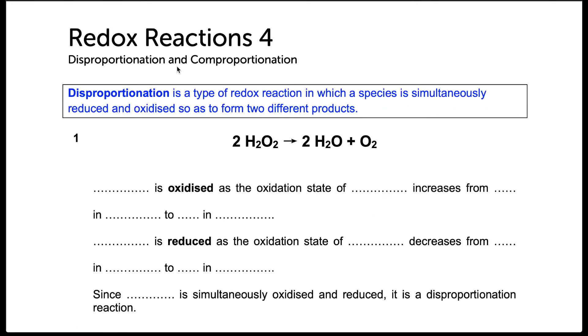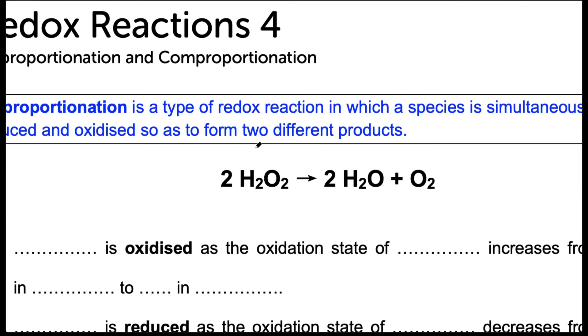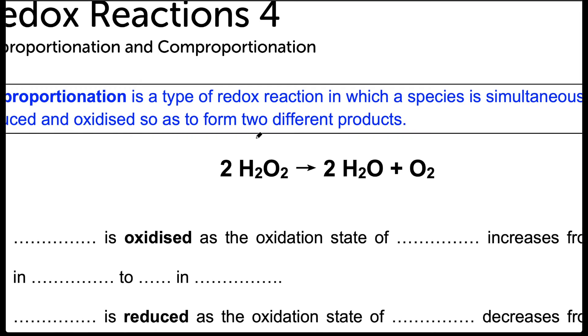A very interesting type of redox reaction is known as disproportionation. This happens when a species is simultaneously reduced and oxidized at the same time to form two different products. One of which you might be familiar with is the decomposition of hydrogen peroxide. Let us assign oxidation states to each of the elements first. In hydrogen peroxide, hydrogen is given an oxidation state of plus one. Since it is a peroxide, the oxidation state of oxygen is minus one.